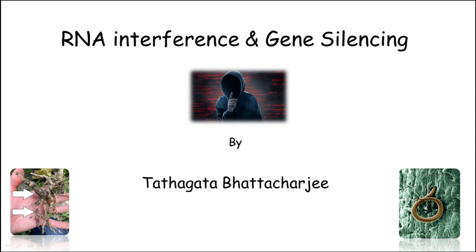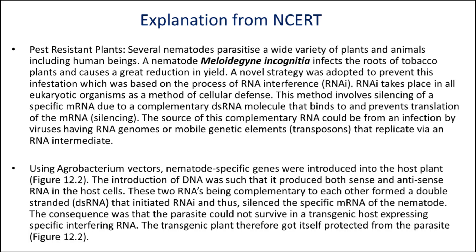So let's start. This is the explanation of RNAi given in the NCERT book. Several nematode parasites infect a wide variety of plants and animals including human beings. A nematode, Meloidogyne incognita, infects the roots of tobacco plants and causes great reduction in yield. A novel strategy was adopted to prevent this infestation, based on the process of RNA interference. RNAi takes place in all eukaryotic organisms as a method of cellular defense.